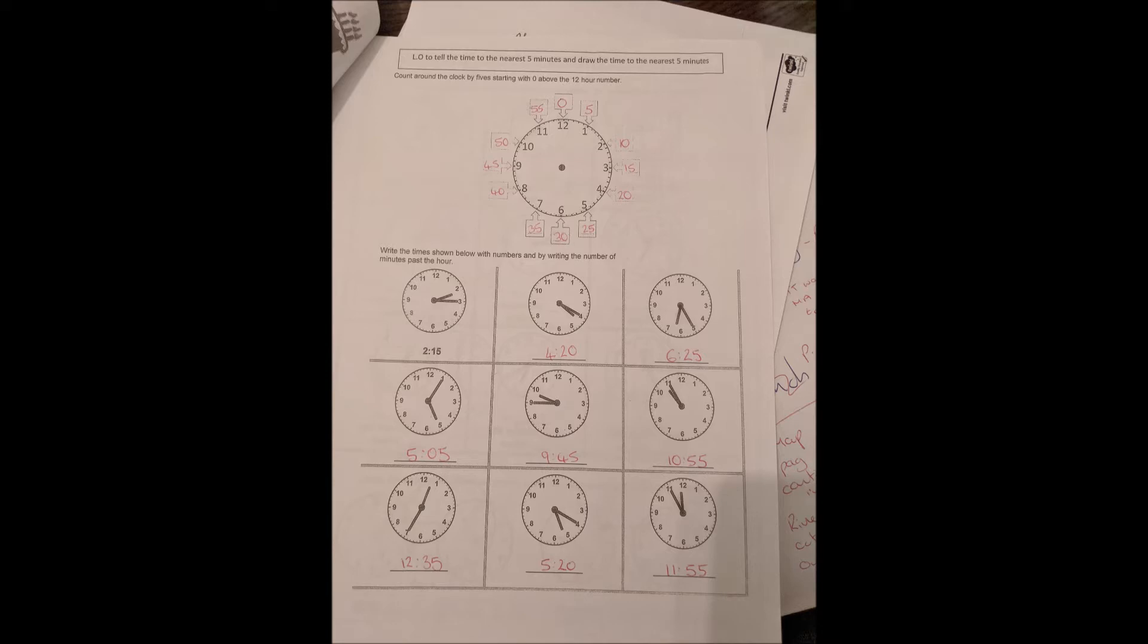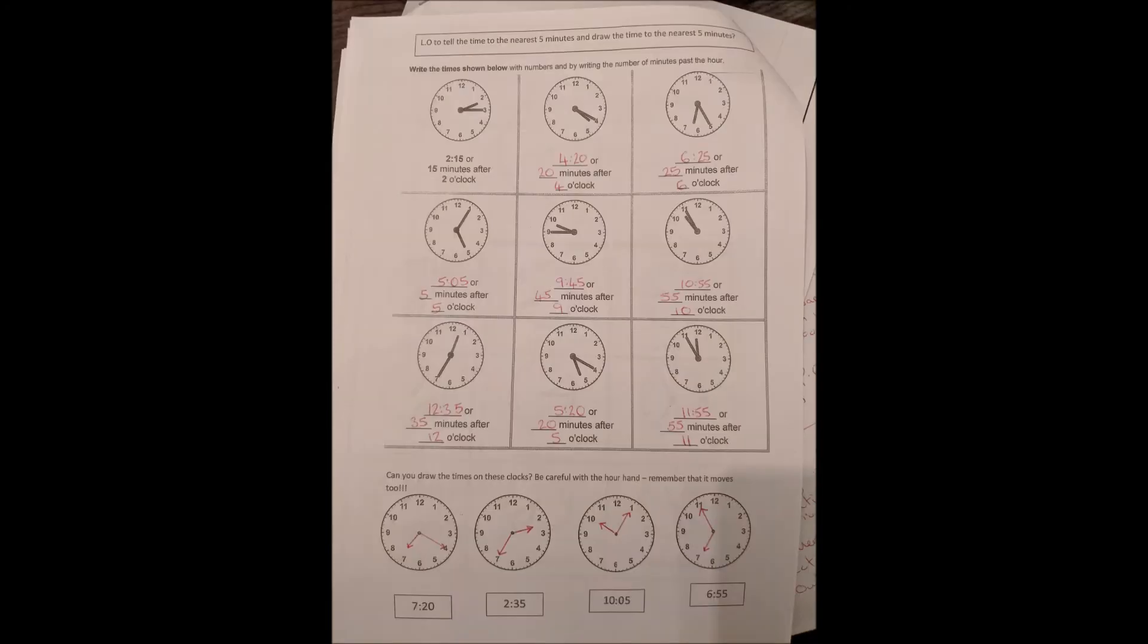Mark the clocks below, going across. Four twenty, six twenty-five, five oh five, nine forty-five, ten fifty-five, twelve thirty-five, five twenty and eleven fifty-five. The answers to the next sheet that starts with the example 2.15.